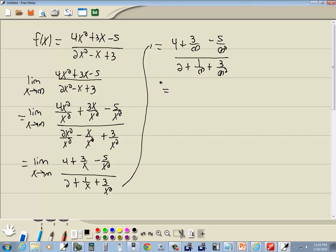Now we're technically not plugging in infinity because it's not a value, we're studying it as it approaches. And remember if you have a number over infinity, that goes to 0. So we're going to have 4 plus 0 minus 0 over 2 plus 0 plus 0, which gives us 4 halves, which gives us 2.